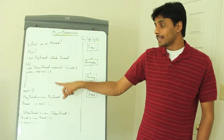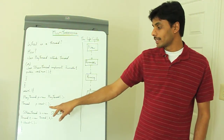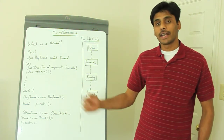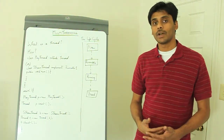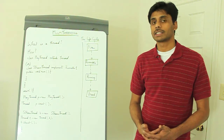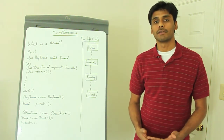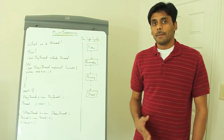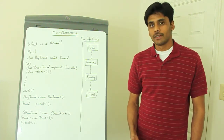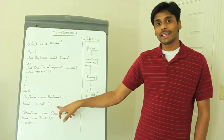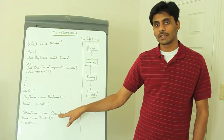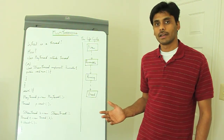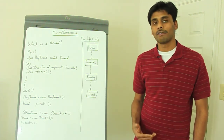If you try calling the run method directly instead of calling the start method, the JVM will not create a new stack for your thread — it's not really a thread. It's just like calling any other method from your main method, because they all share the same stack. Only when you call the start method on your thread instance does the JVM allocate a new stack for your thread, giving it its own path of execution.